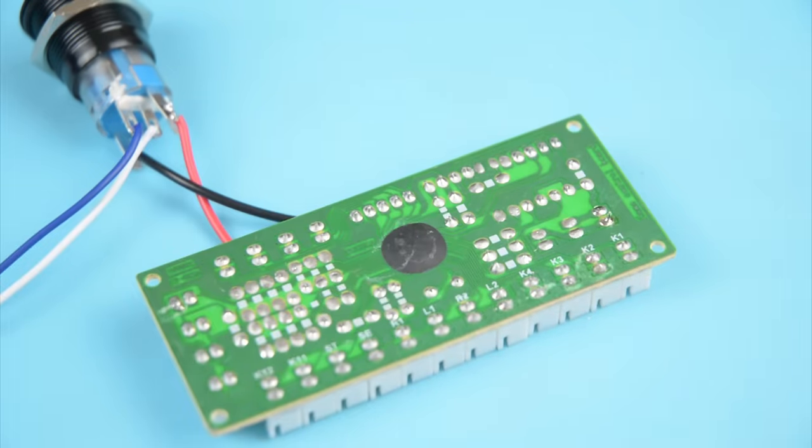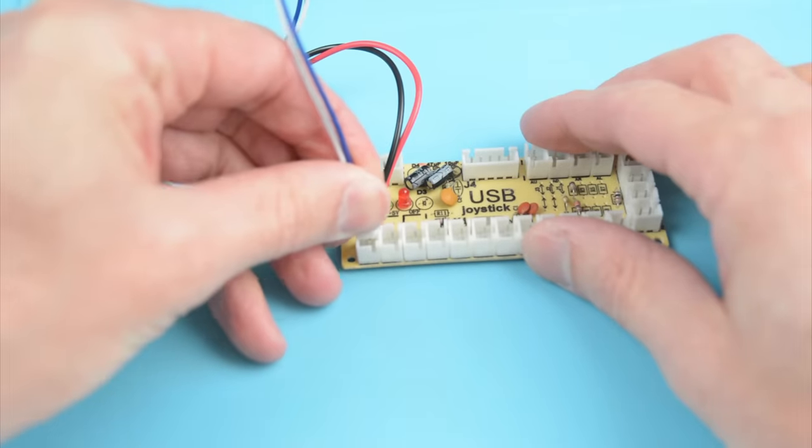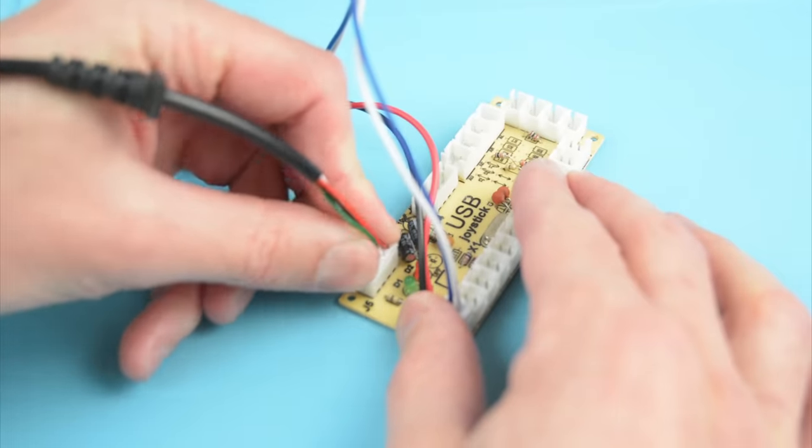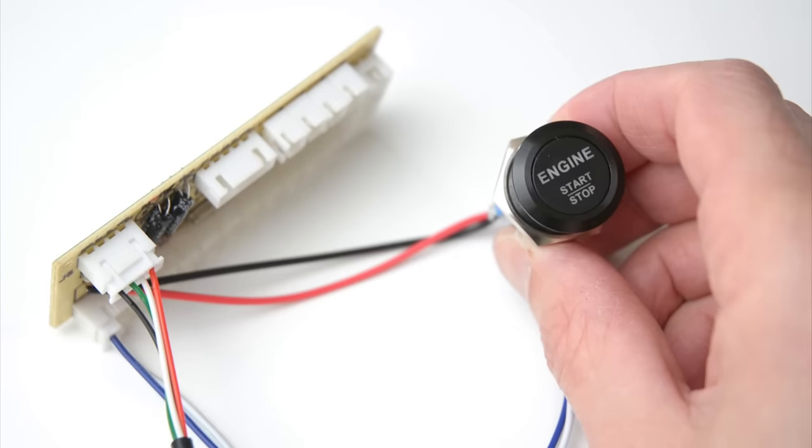With the LED power connection soldered, connect the switch and the USB cable to the board. Once the joystick encoder is plugged into a PC, the LED in the switch will be illuminated.